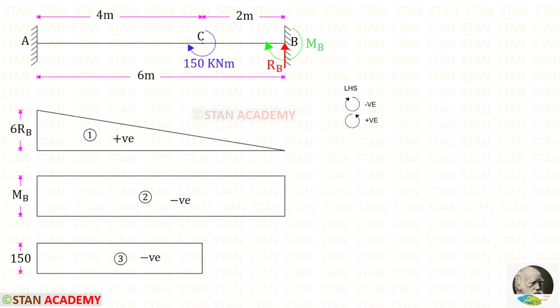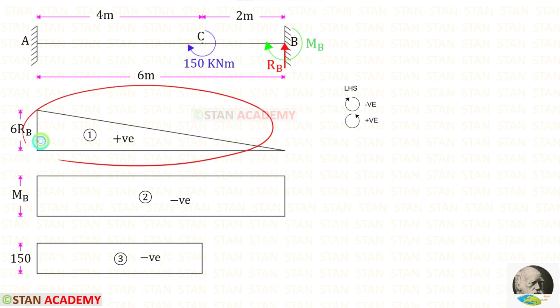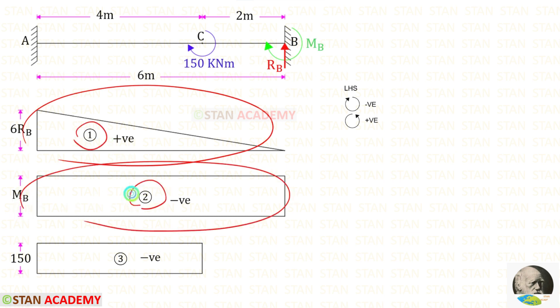Now let us draw the bending moment diagram due to the concentrated moment of 150. It is acting in the clockwise direction, so it will be negative. Let us label the first diagram as 1, the second as 2, and this one as 3.